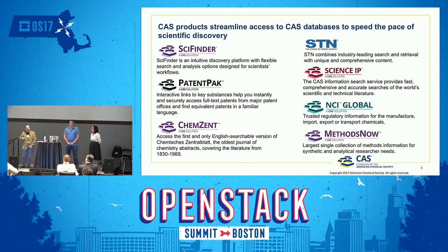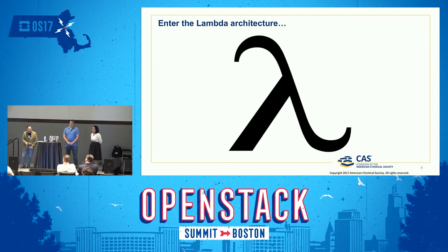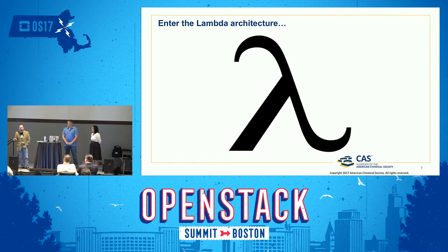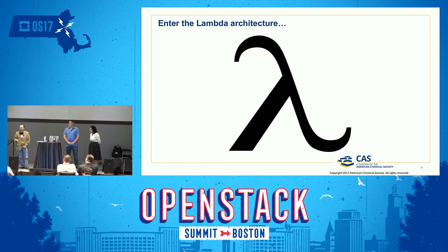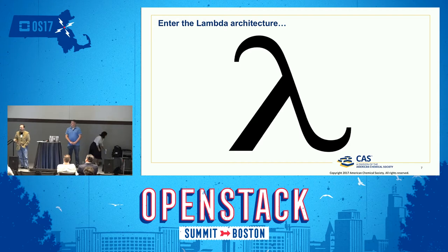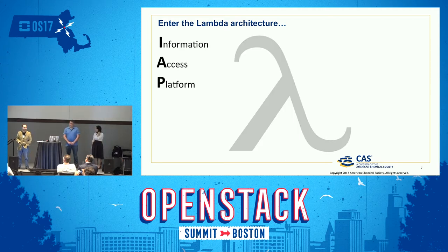Before we go specifically in the SciFinder direction, I want to introduce the concept we alluded to in our subtitle: the Lambda architecture. Just a quick show of hands — who in the room has heard of the Lambda architecture? This is a term coined first by Nathan Marz, I believe in 2011. It's a general description of a big data architecture designed to scale technically and also provide an important characteristic called human fault tolerance. We have a particular variant of the Lambda architecture at CAS, and you'll hear us allude to this acronym — we call it our information access platform, or IAP.